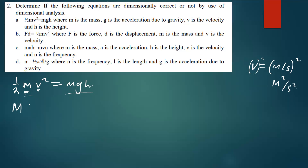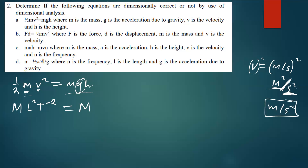The dimensions for v² are L² T⁻². On the right side, we have mass M, then gravity g which is meters per second squared — so that gives L T⁻² — and then h, the height, is just a length so its dimension is L.